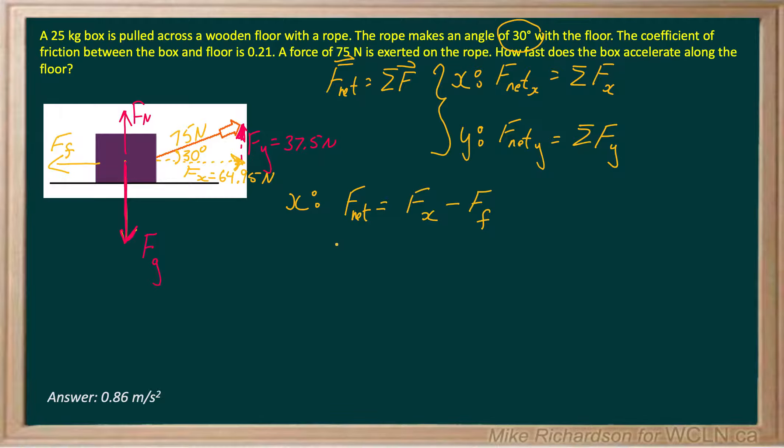Now, my net force in the x will be ma. Fx is 64.95, and we know the formula for force of friction is the coefficient of friction times the normal. We need to figure out what this normal force is. So we're going to switch to the y direction.